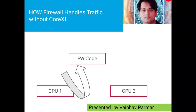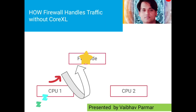Now let's understand how traffic is handled when Core XL is disabled. Consider you have two CPUs — CP1 and CP2. When a packet comes in on CP1, CP1 sends an interrupt to the firewall code to process the received packet. The firewall code then locks itself and processes the packet received from CP1.